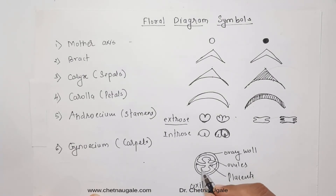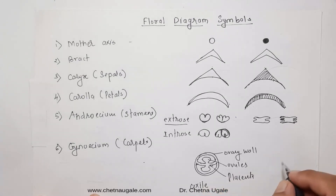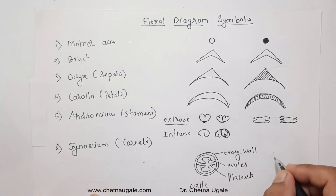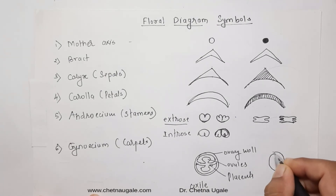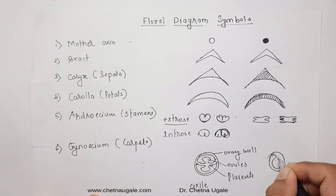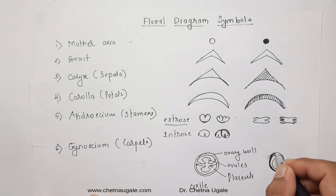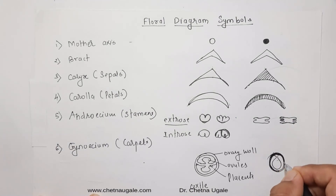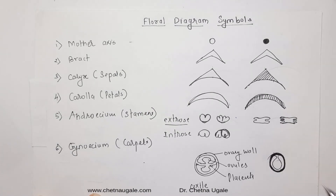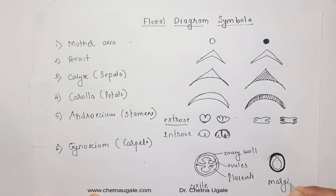Depending upon the different types of placentation, this transverse section of the ovary differs. This ovary shows two locules — that is, bilocular syncarpous — because the carpels are fused. When it is unilocular and monocarpellary, meaning a single ovary, it is represented simply, showing a single ovary in a single locule. This type of placentation is termed marginal placentation.